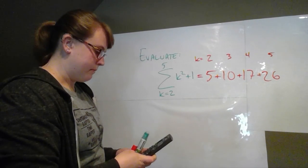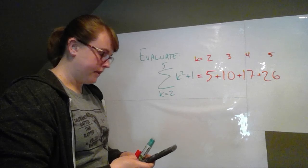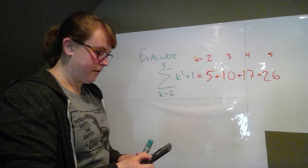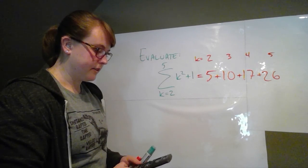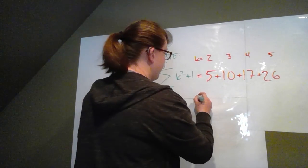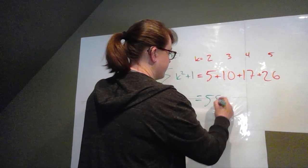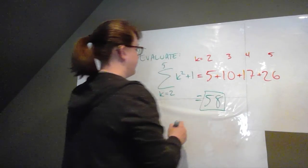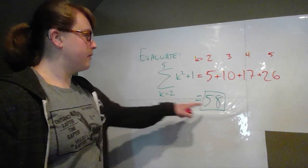And now we just have to add them all together. So 5 and 10 and 17 and 26 gives me 58. So my answer for the sum right here would be 58.